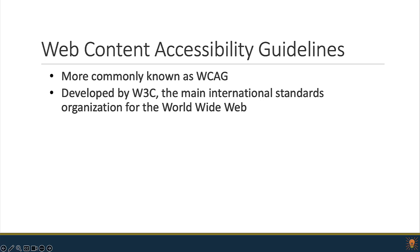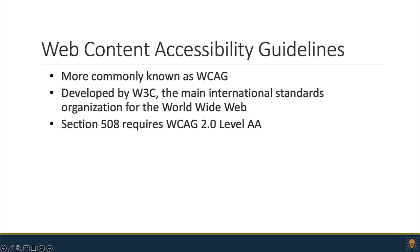WCAG was developed and is maintained by W3C, which is the main international standards organization for the internet. The internet wouldn't work if we weren't all playing by the same rules, so they come up with those rules — and they also come up with accessibility guidelines. WCAG has a lot of different levels and sections. Specifically, Section 508 requires WCAG 2.0 Level AA. This is what the law requires in the United States, and it will get you basically to where you need to be for most people with disabilities.